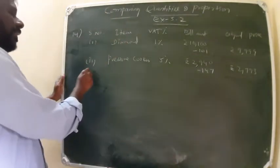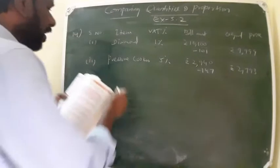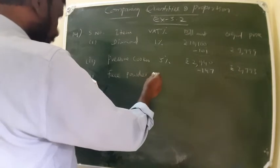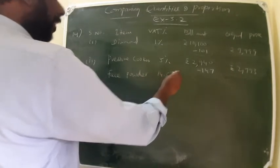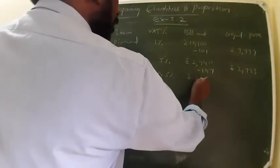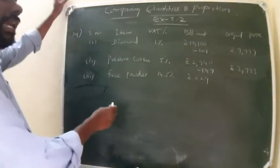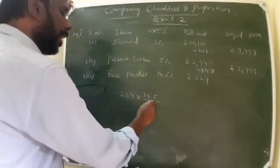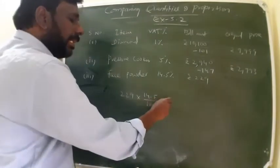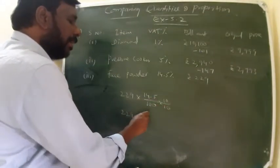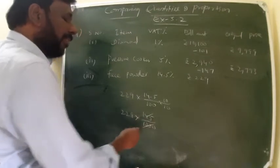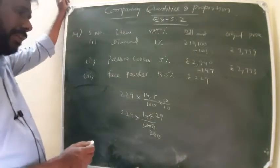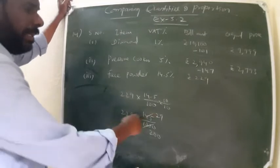In the same way, here you will see the third item, that is face powder. Face powder 14.5%, bill payment is Rs. 229. So you have to find out the VAT: 229 into 14.5 by 100. Multiply with 10 by removing the decimal: 229 into 145 by 1000.